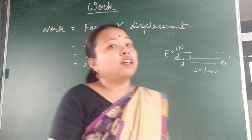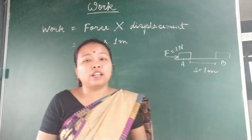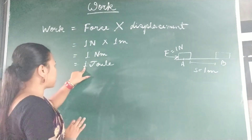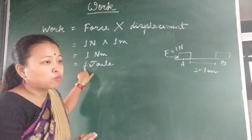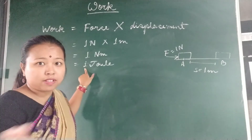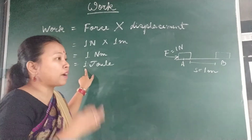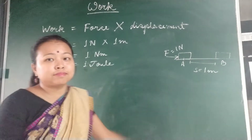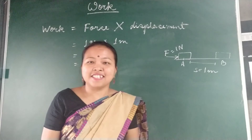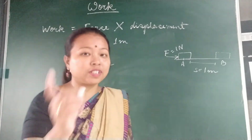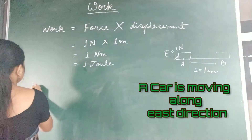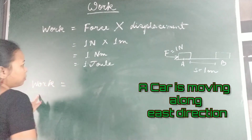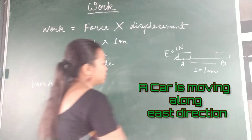Now the question arises: is the work done always a positive value? As I have got plus one here, can I get minus one, minus five, or any other negative value? The answer is yes, work done can be negative also.